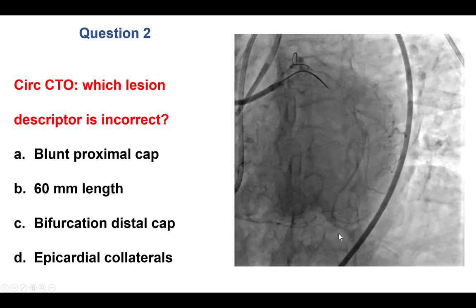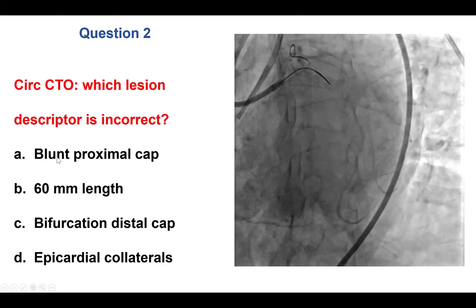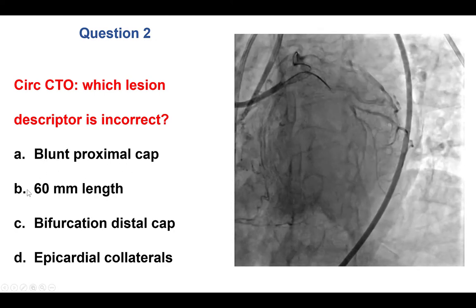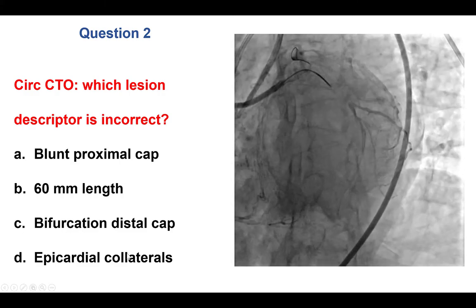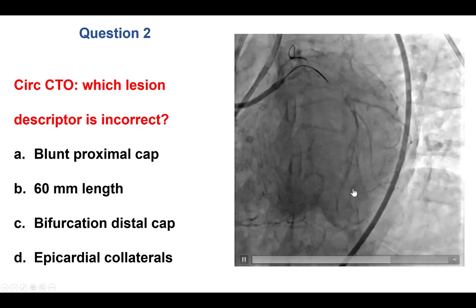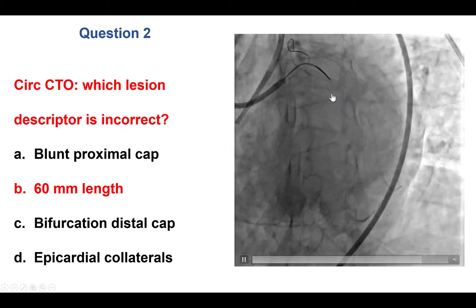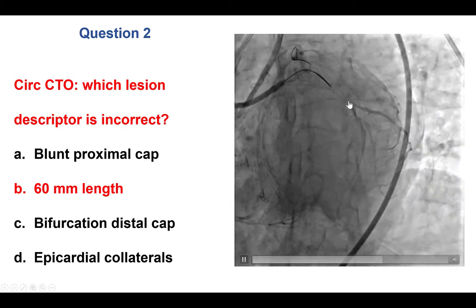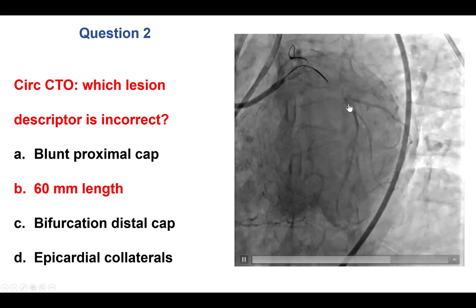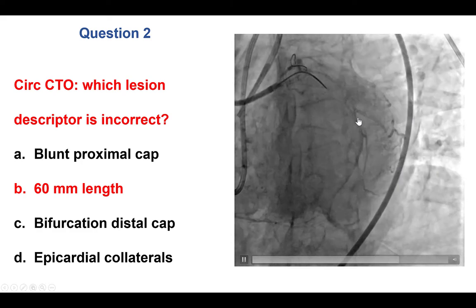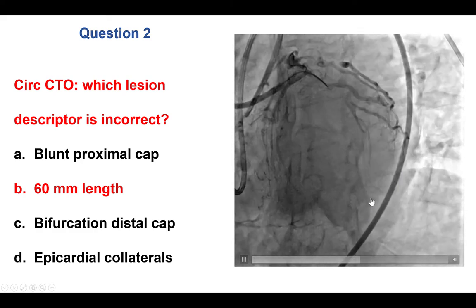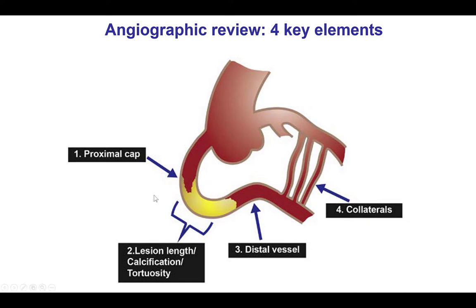The question is which descriptor of the lesion is incorrect: A, the blunt proximal cap; B, 60 mm length; C, bifurcation of the distal cap; or D, presence of epicardial collaterals. The answer is B. The lesion does have a blunt cap at the bifurcation of a large obtuse marginal branch. However, it is not long — it's actually a short CTO of about 20 mm. There is a bifurcation at the distal cap, and the circumflex fills through epicardial collaterals.